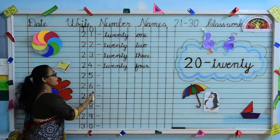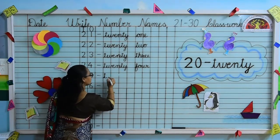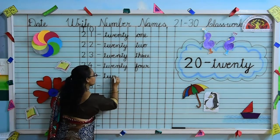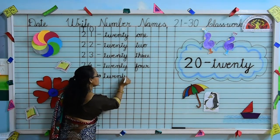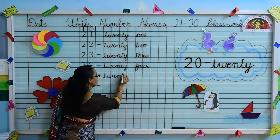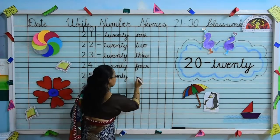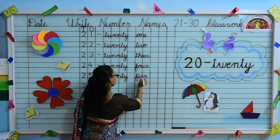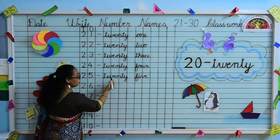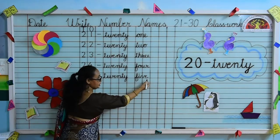Next number is 25. 2, 5 — 25. Speak and write. Write T-W-E-N-T-Y, 20. What is the spelling of 5? Write F-I-V-E. So speak and write. F-I-V-E, 5. T-W-E-N-T-Y, F-I-V-E, 5.